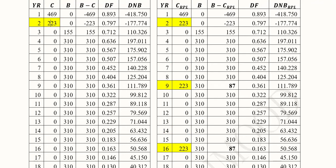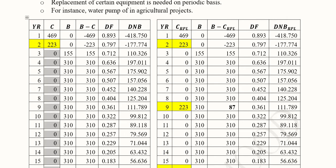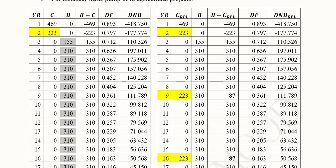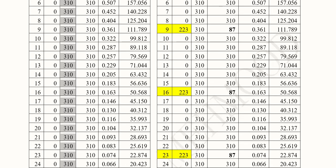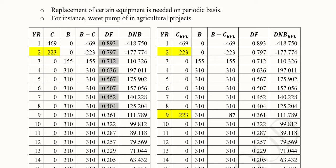This is the difference between the two streams; the other values are the same. The remaining costs are zero because there is no further need for installation of another water pump. The benefits are zero for the first two years because installation has not been completed, and operation starts from the third year. Definitely the benefits start to accrue from that point and are constant throughout the remaining stream. Then we find out the net benefits, which is the difference of benefits and costs.